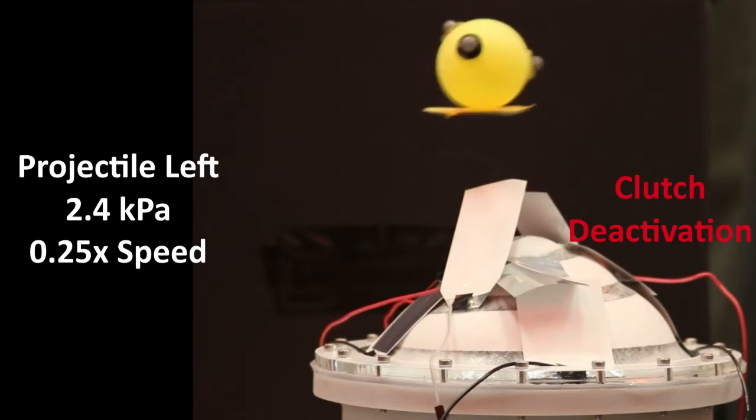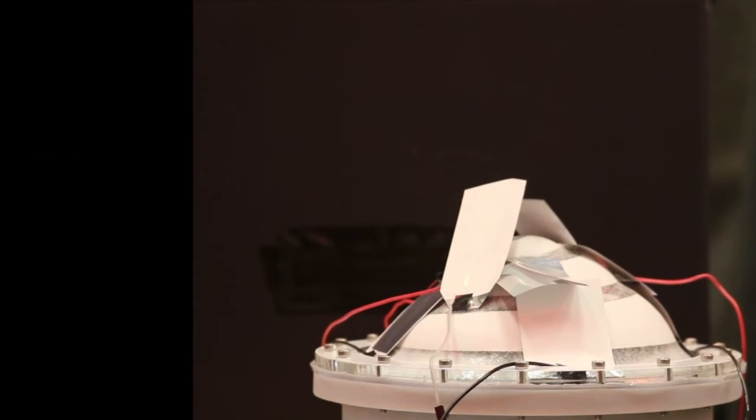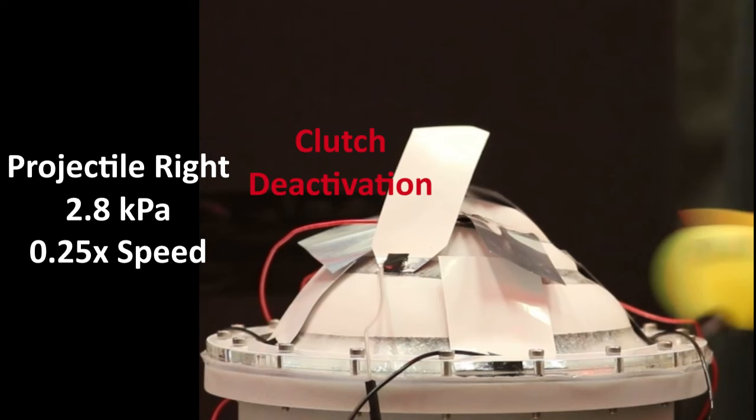We then deactivate the central clutch to release the membrane beneath the ball, which applies force on the object in the desired direction.